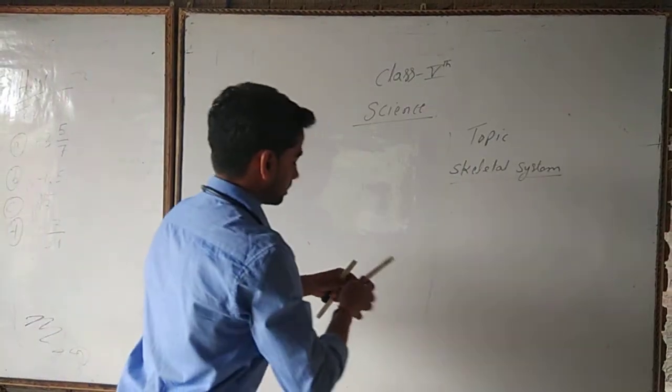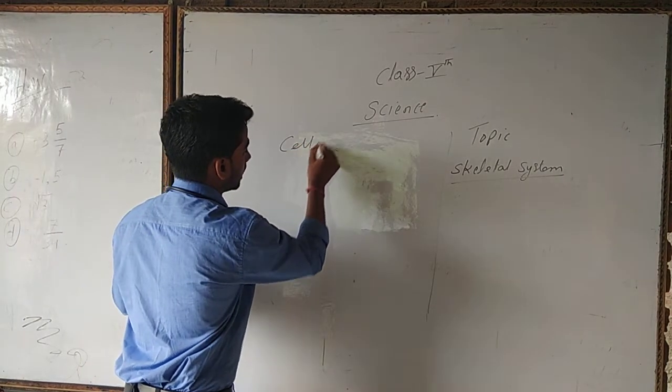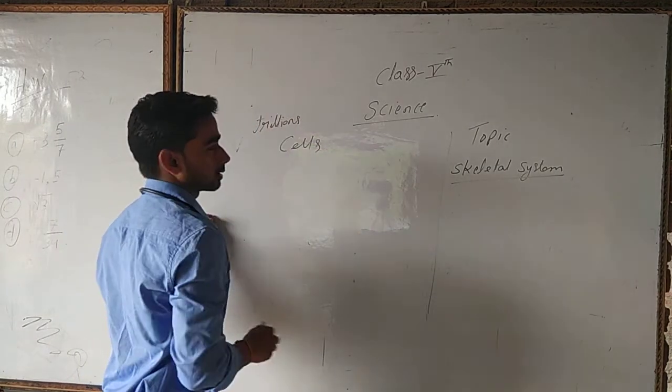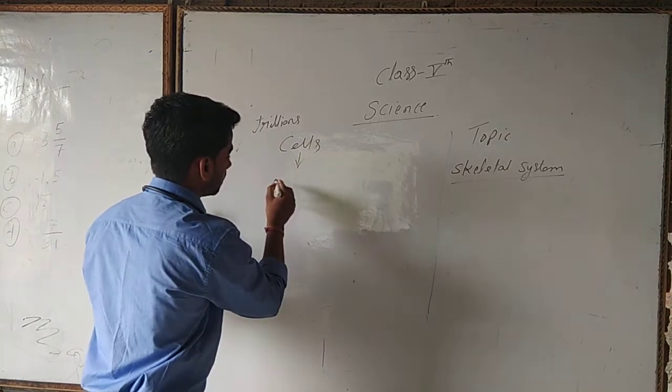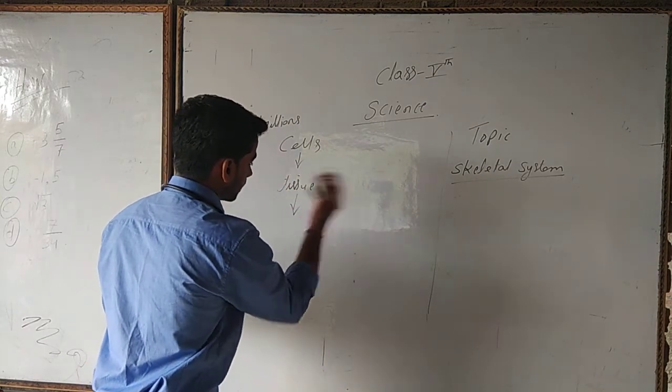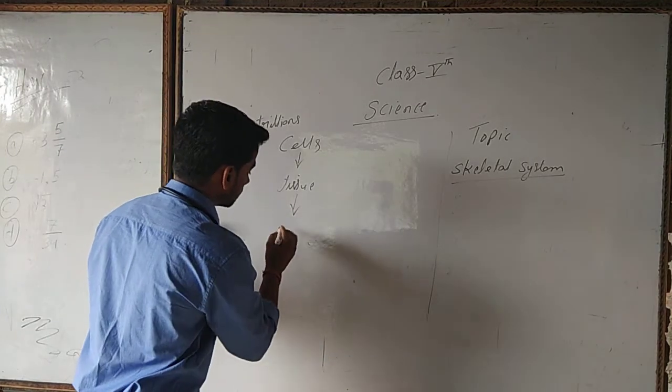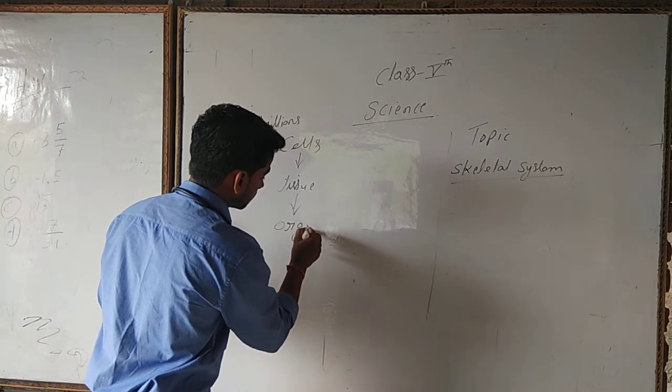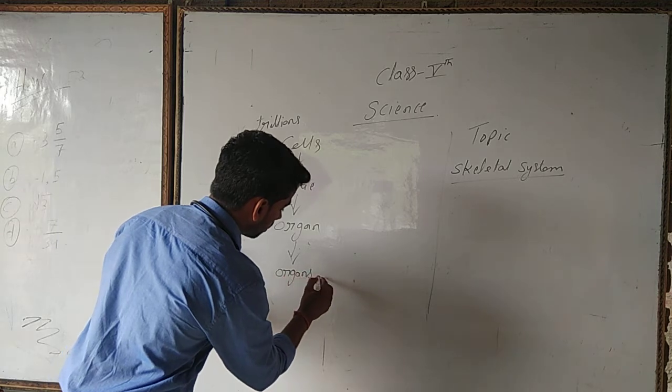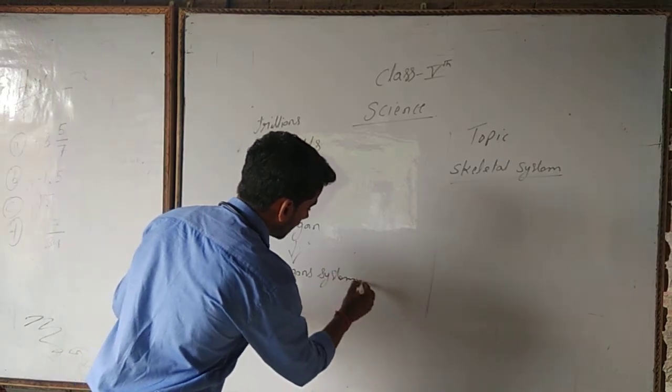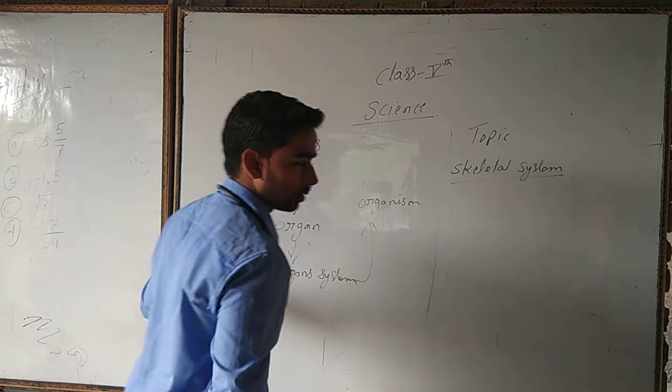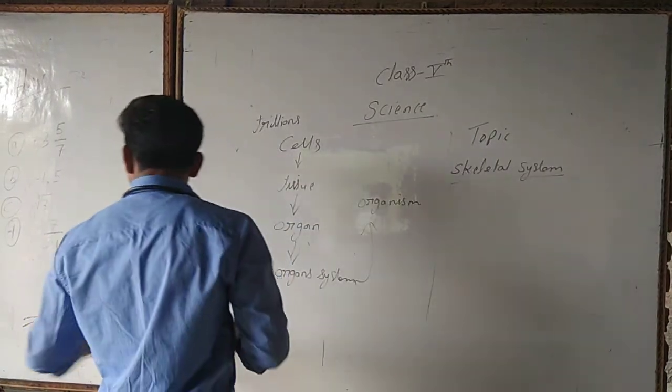Let's do some warm up. As you already know, our body is composed of trillions of cells. A group of cells come together and they form tissue. A group of tissue comes together to form organs. Then a group of organs comes together to form an organ system, and this organ system makes an organism like you, me, and anybody.